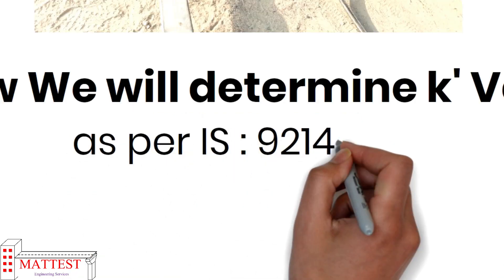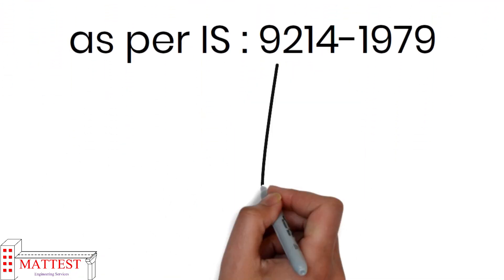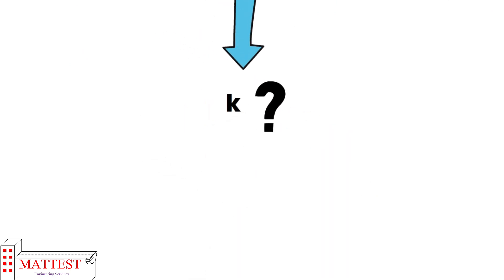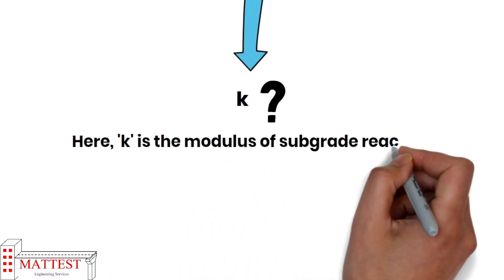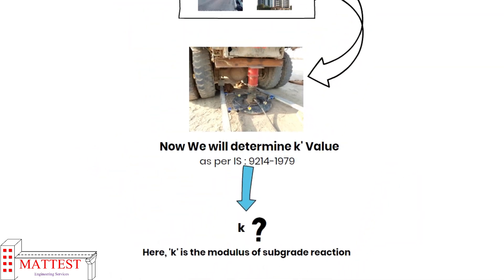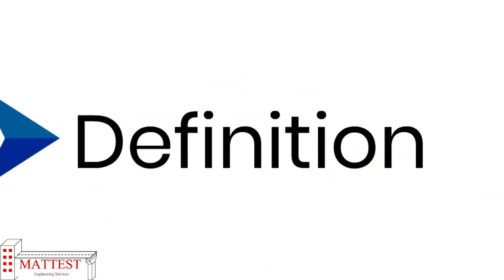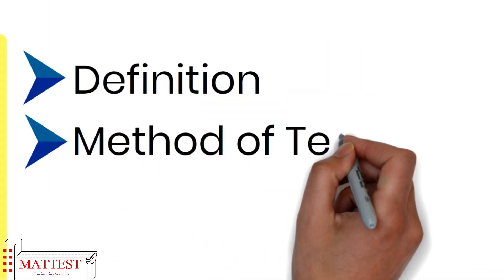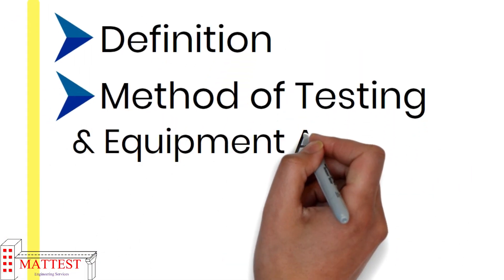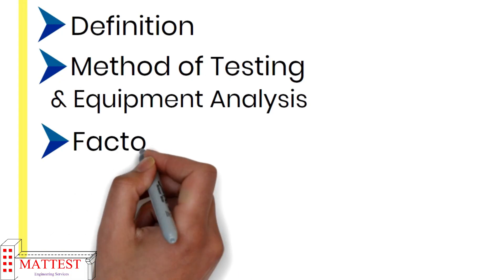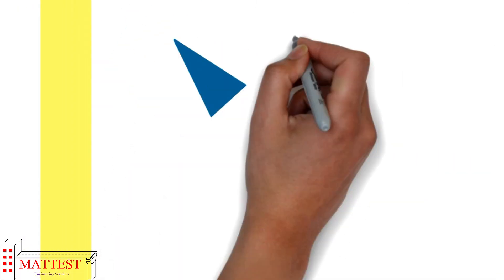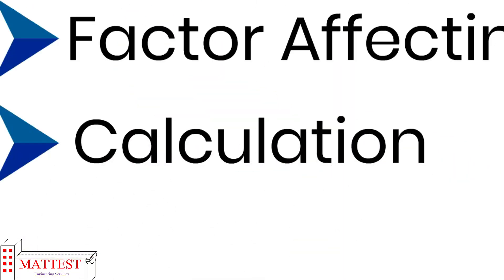As per IS 9214-1979, k is the modulus of subgrade reaction. These are the main points that we are going to discuss today: definition, method of testing and equipment analysis, factors affecting correction as well as calculation, and the last one is conclusion.